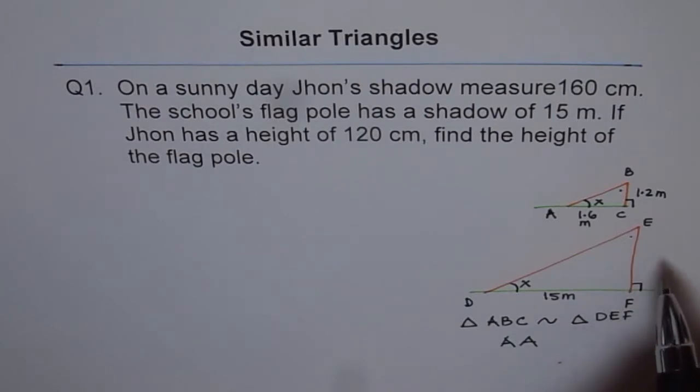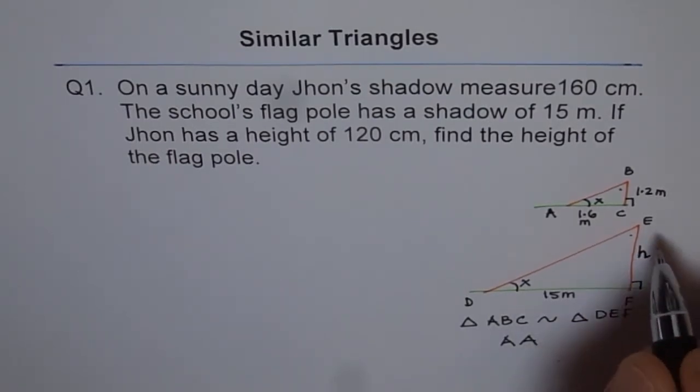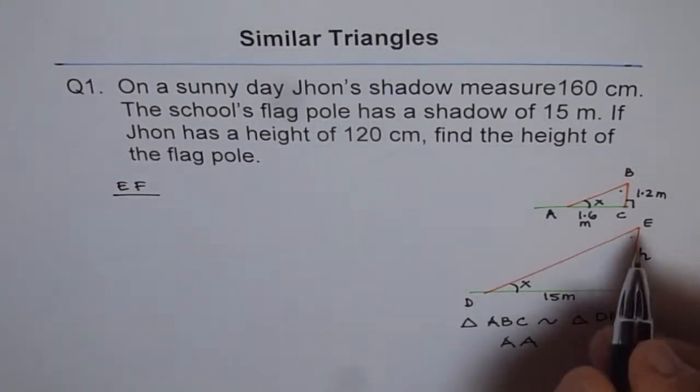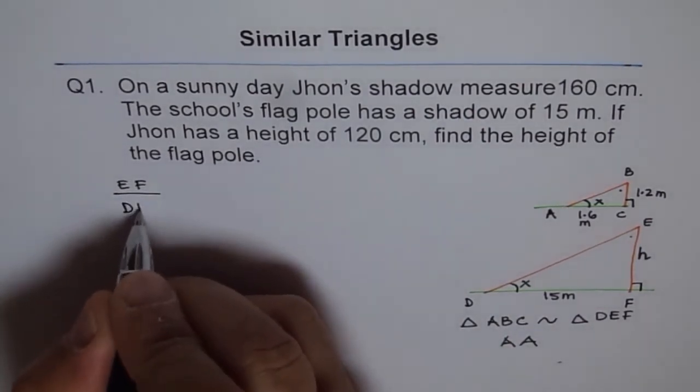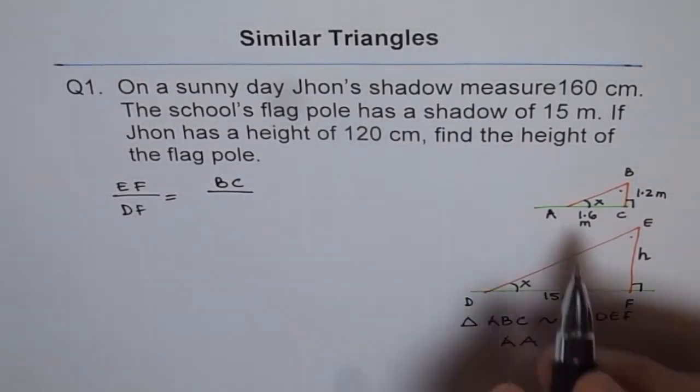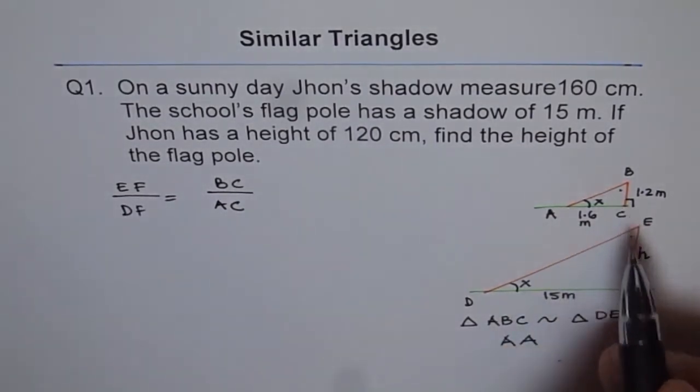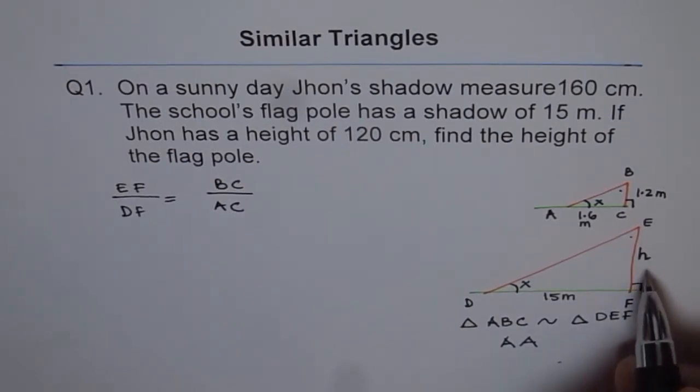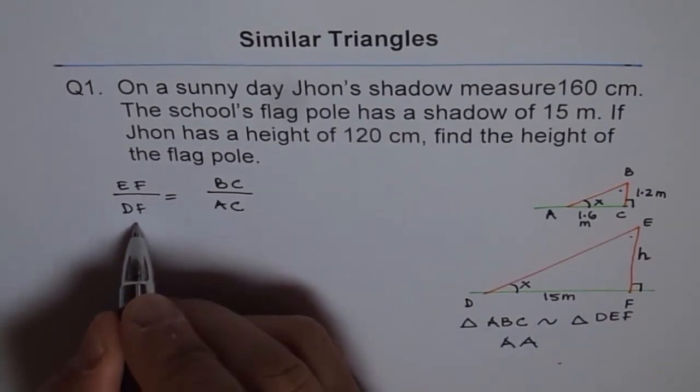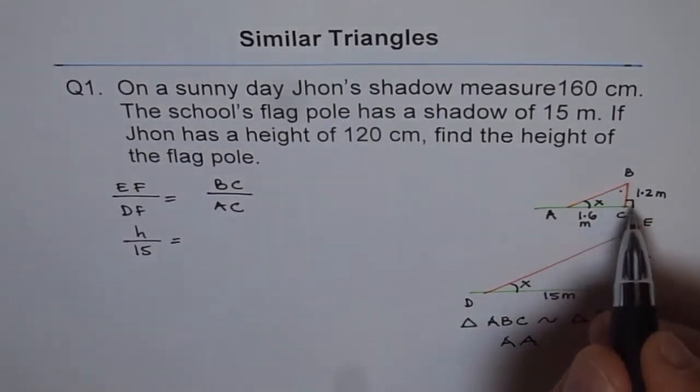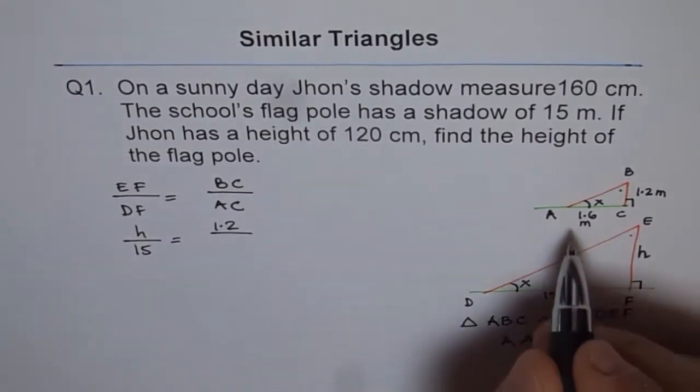Correct? So we can write any side over any side. Now the thing is, we have to find the height of the flag. So let me write this EF as H, right? Now, so since the triangles are similar, EF over DF of triangle DEF is equal to BC over AC of triangle ABC. Correct? Now we can plug in the values which we know. H is the variable, the height of the flag, which we need to find, which is EF. So we write H over DF is 15 is equal to BC is 1.2 over 1.6.